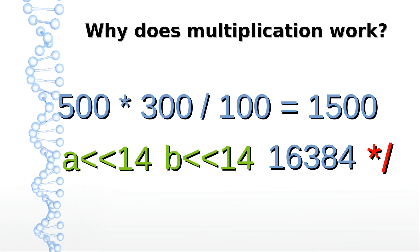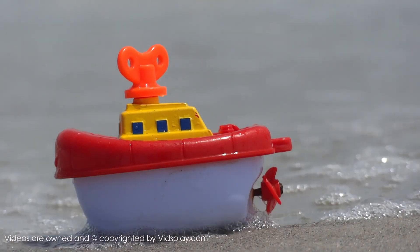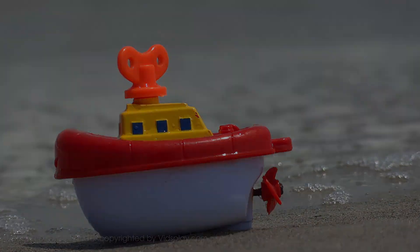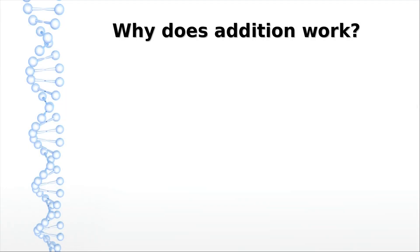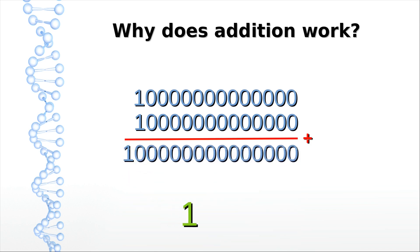Finally, addition. Why finally? Because subtraction is just addition with a negated number — that's why. Let's add our two halves. And what does the result represent? One — just as you might expect from adding two halves. And if you don't see how that's possible, remember these are two fractions. The decimal point is here. And those were all the basic arithmetic operations — we have covered them all.